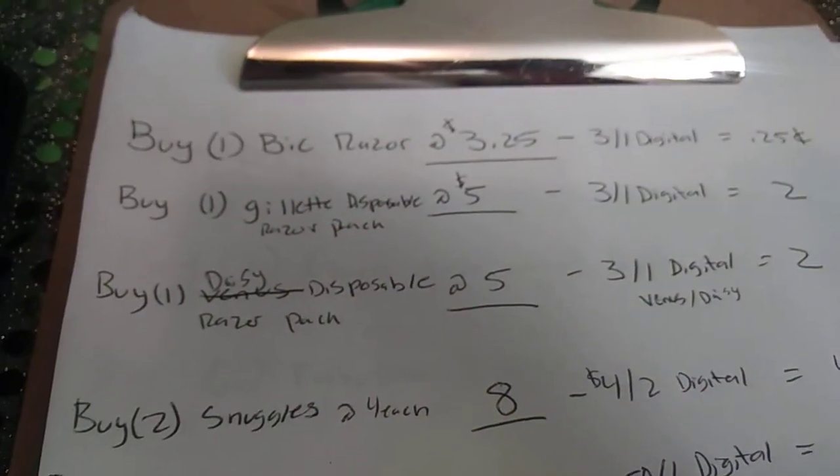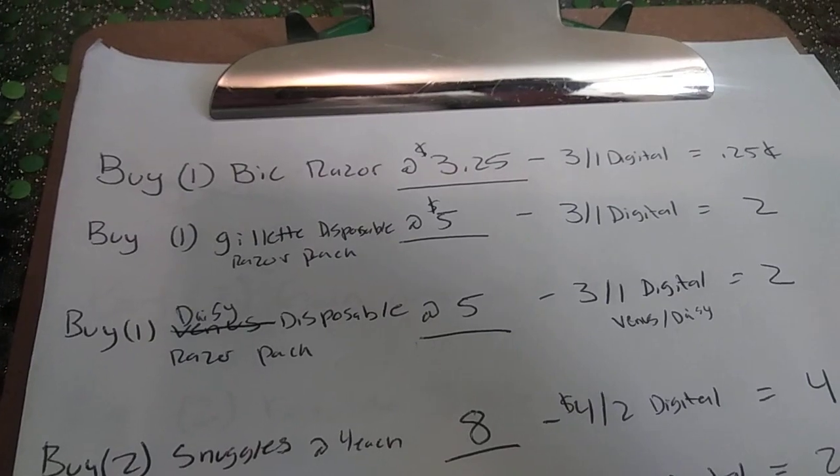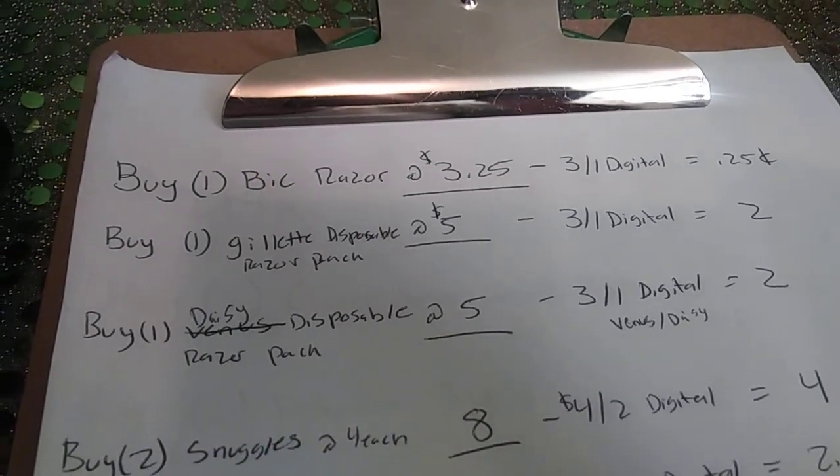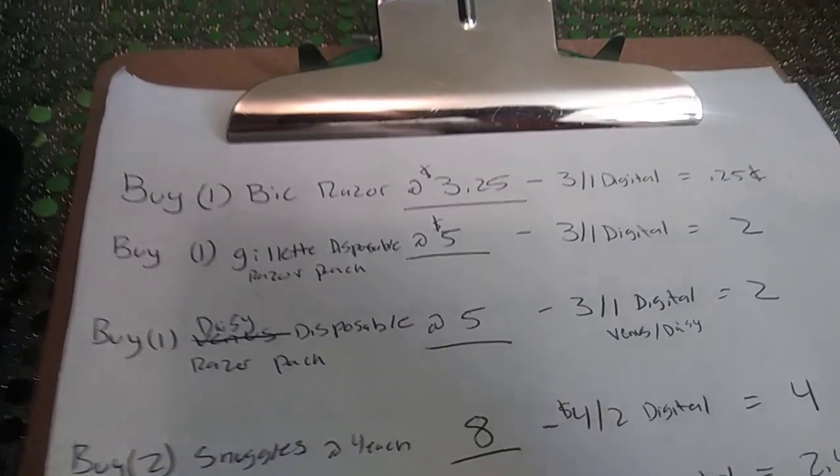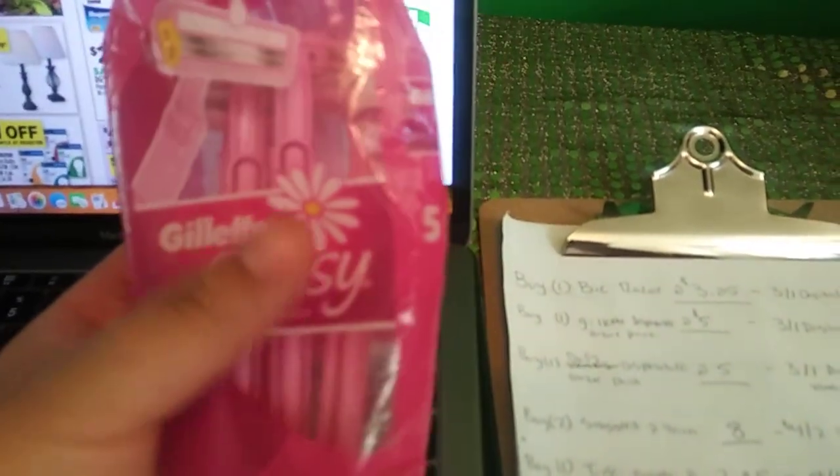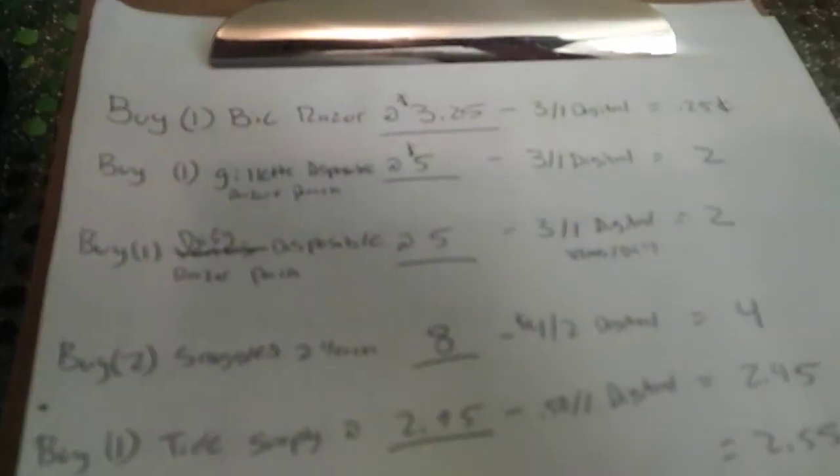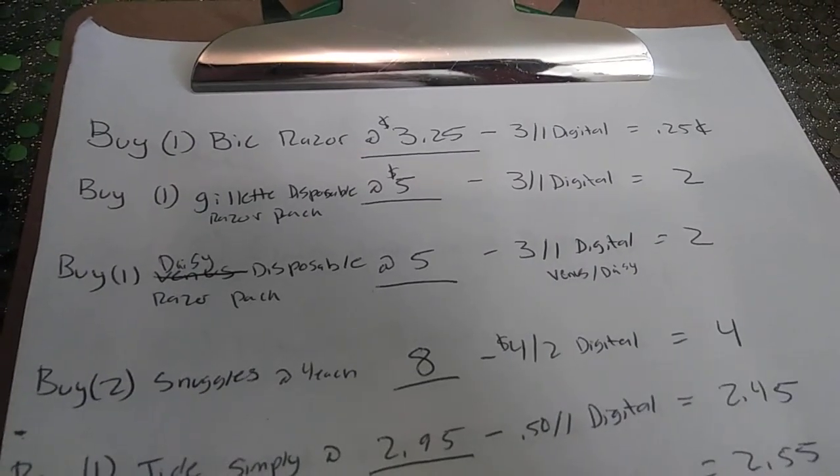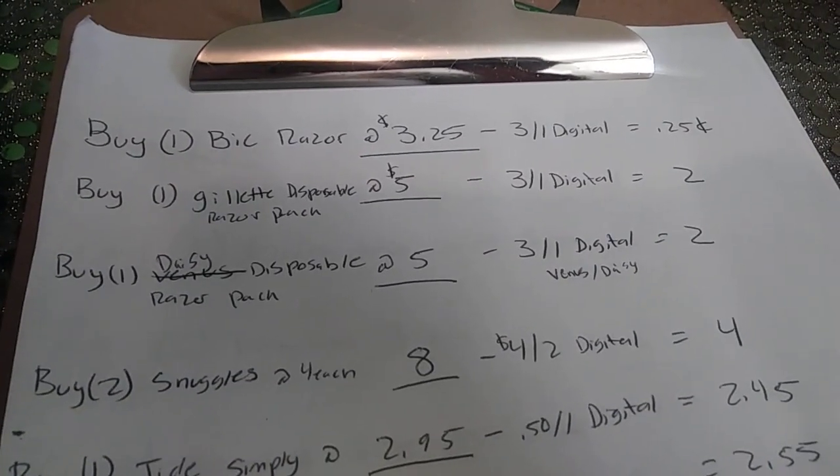Next you would want to get a Gillette disposable razor pack at $5. Those ones are the little blue packs. I have the Daisy one here and it comes in a pack the same size as this, it's just blue. It says Gillette on it as well. So you want to grab one of those at $5. There is a $3 off one digital coupon making it $2.